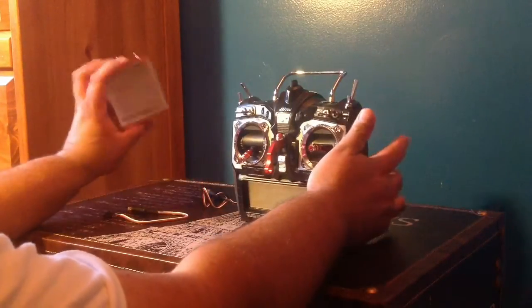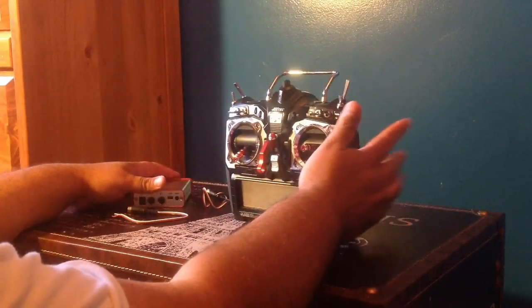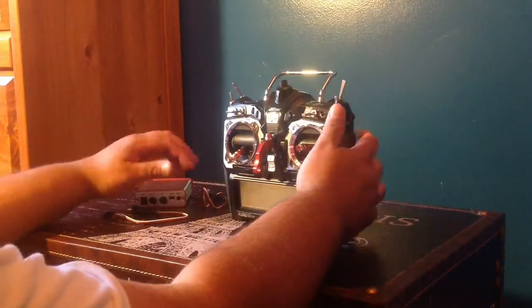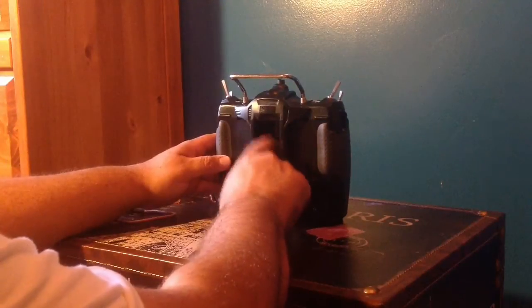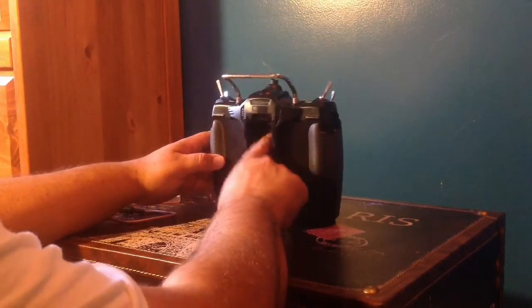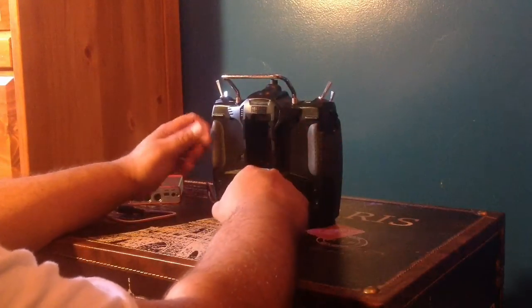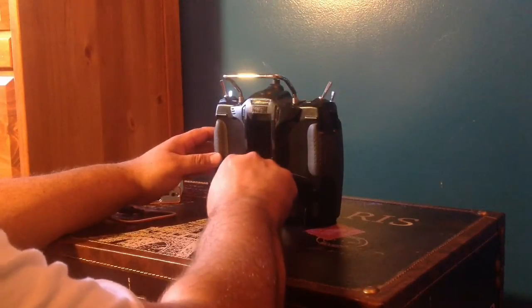You can power the transmitter using the battery of the radio. The first thing we have to do is remove the module from the back, the 2.4 module. I already removed it, and we're going to look into the order of the pins.